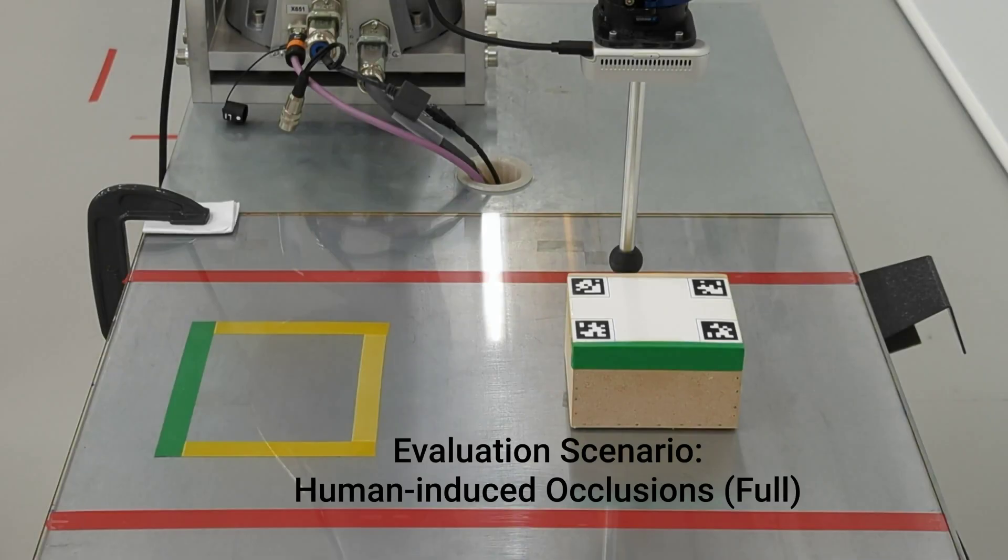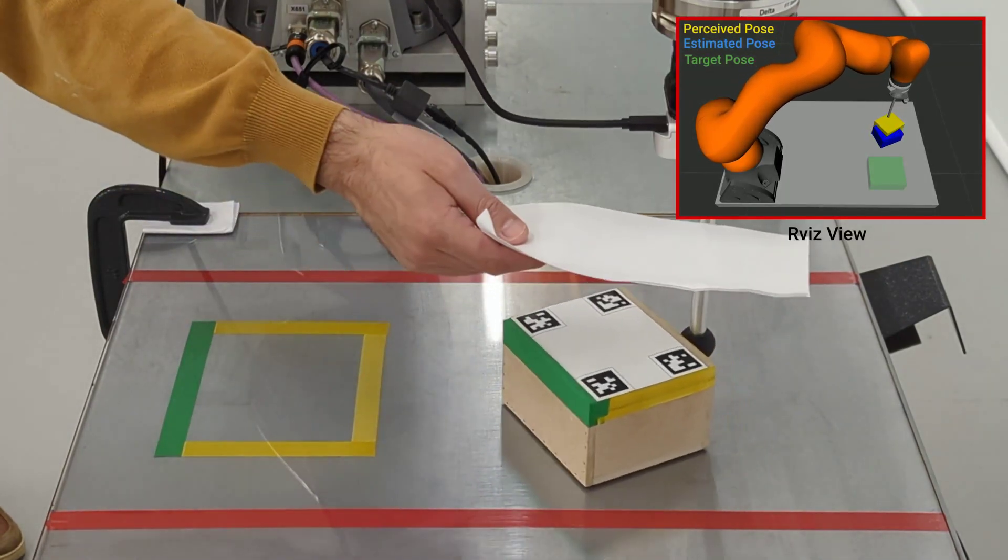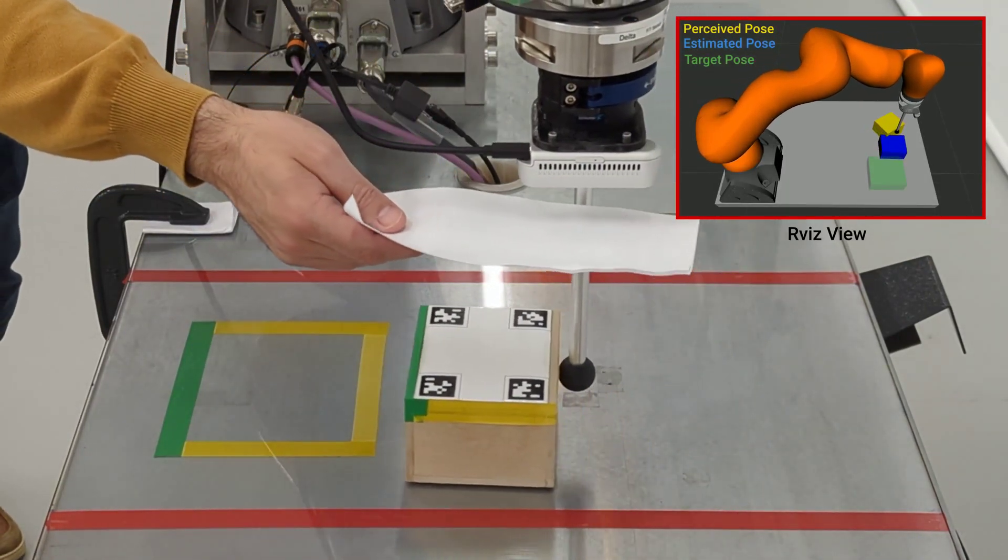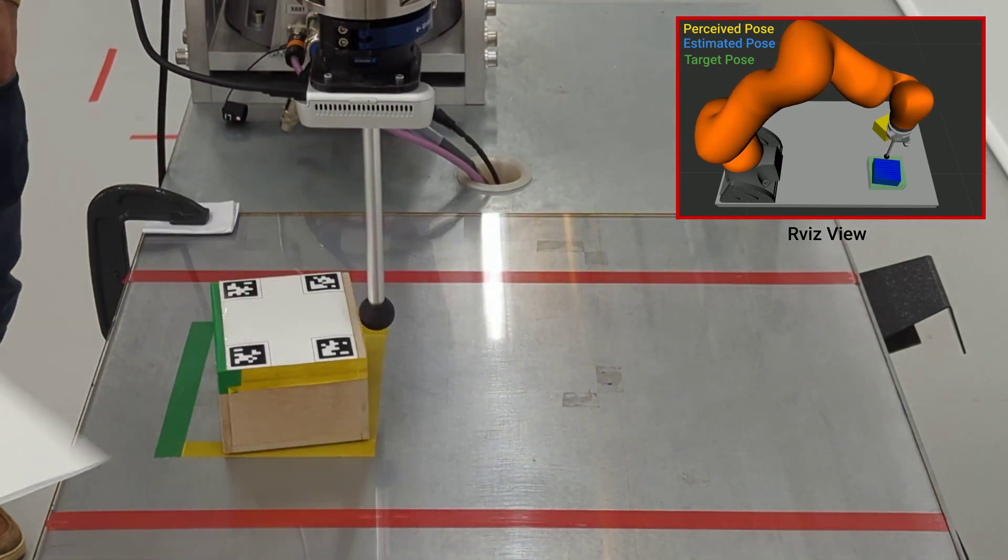We also consider a scenario where the human induces occlusion for the complete duration of the task. This is particularly challenging due to the lack of visual feedback to correct compounding estimation errors throughout the task completion.